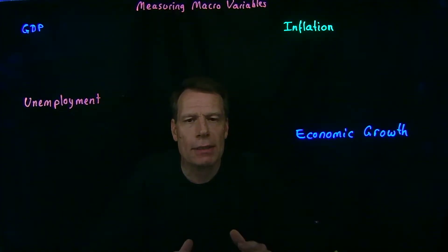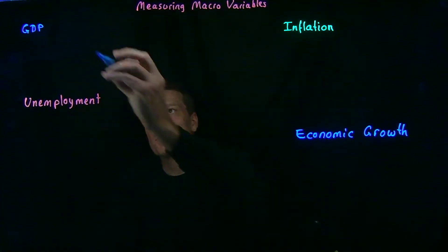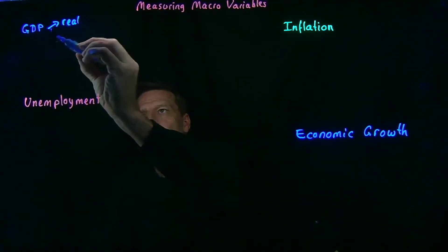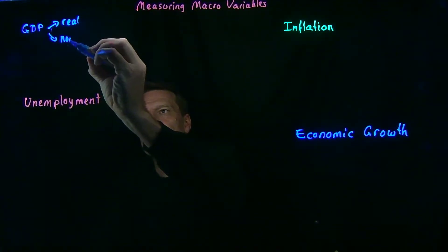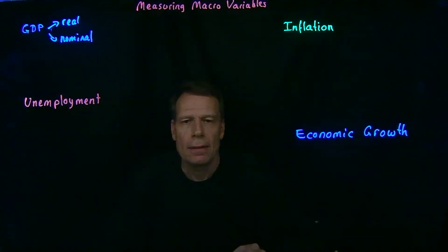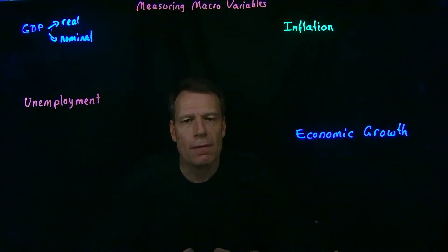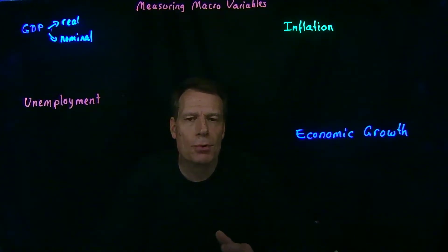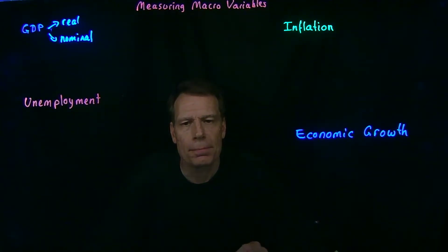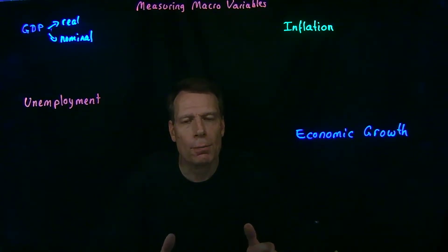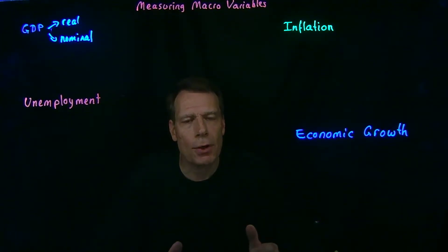We've already talked a lot about GDP. We've distinguished between real GDP and nominal GDP, where nominal GDP values current output at current prices, whereas real GDP values current output at the prices of some base year and keeps those prices constant over time. So if we see an increase in real GDP, it must be because total output has gone up. Whereas if we see an increase in nominal GDP, it could be that output has gone up, but it could also be that prices have gone up.